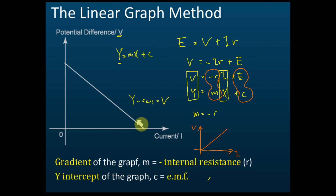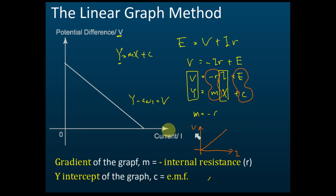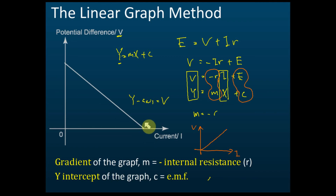This is a different apparatus setup. This graph measures terminal potential difference, which is different from just measuring potential difference. So if you see potential difference plotted against current and the line goes down, don't think it's a mistake — it's just a different experimental setup. Gradient equals negative internal resistance, and y-intercept equals EMF.